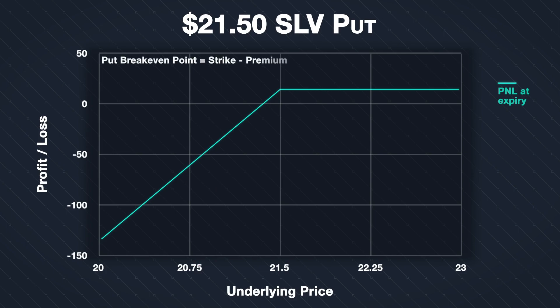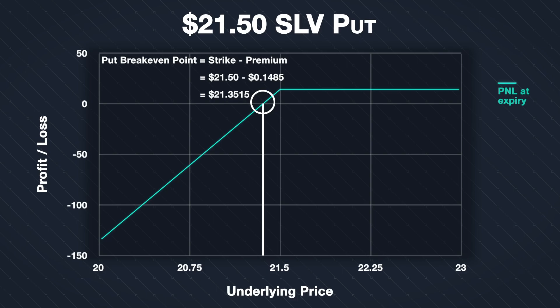The breakeven point for a put option is the strike price minus the premium collected. Including fees, we use the total credit of $0.1485 per share, so the breakeven is: $21.50 − $0.1485 = $21.3515, or roughly $21.35. This is the point at which the profit or loss line crosses the x-axis on the P&L chart.